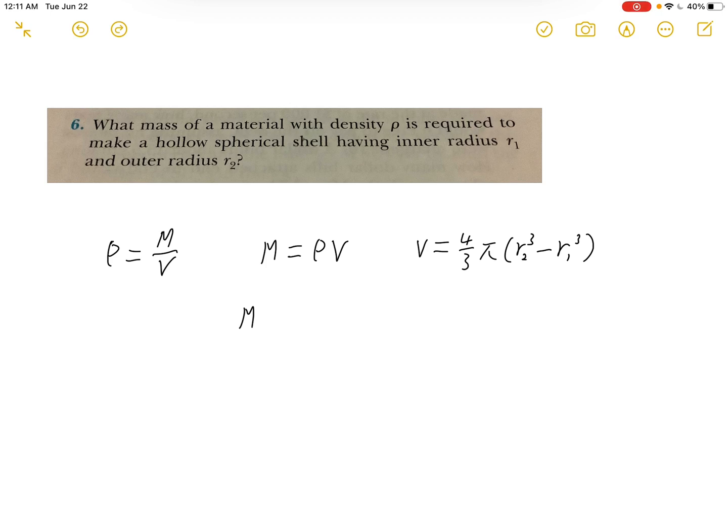And so we just put this in our formula, which will be mass equals rho 4 thirds pi, parentheses, r2 cube minus r1 cube. And that's our answer. Thank you.